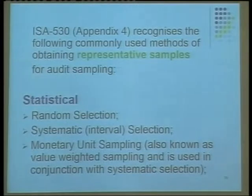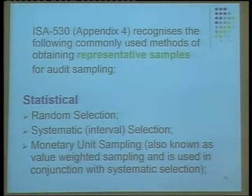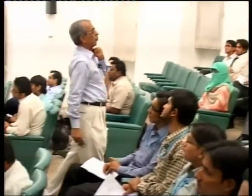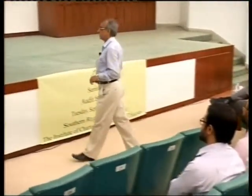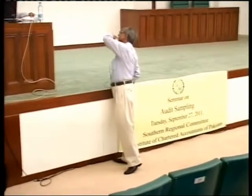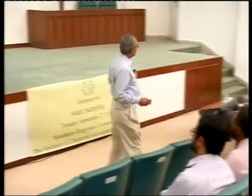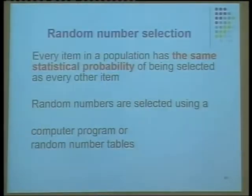For statistical or random selection, the first method is random selection and the second is systematic interval selection. Systematic interval selection has been modified into monetary unit sampling (MUS), in which we consider higher values — we select our sample in such a manner that mostly high values are selected. This is also known as value-weighted sampling and is used in conjunction with systematic sampling. Non-statistical methods include haphazard selection and block selection.